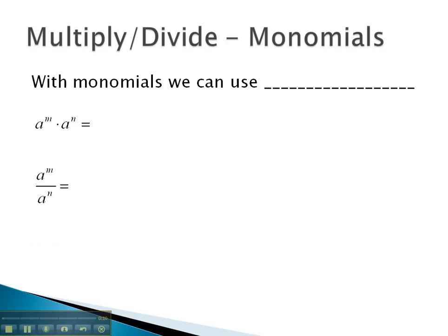When we're multiplying and dividing with rational expressions of monomials, we can use exponent properties because there is no adding or subtracting in the problem.